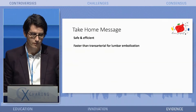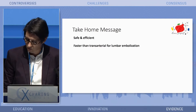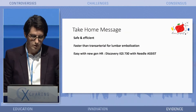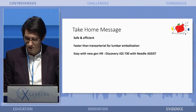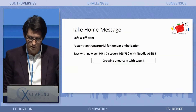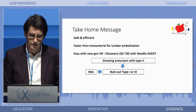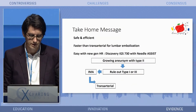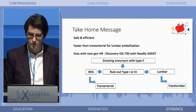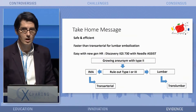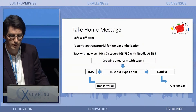The trans-lumbar approach is self-sufficient and actually faster in my hands than the transarterial route. It's easy with the new generation hybrid rooms with cone beam CT. So again — rule out type 1 and type 3, use transarterial for IMA, and use trans-lumbar for the lumbar endoleaks.